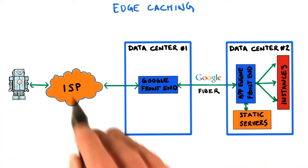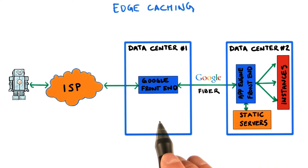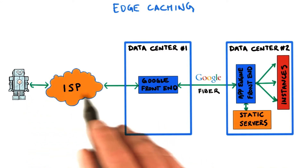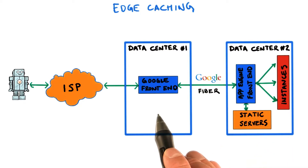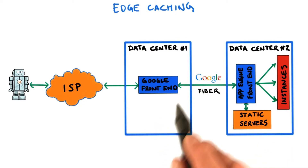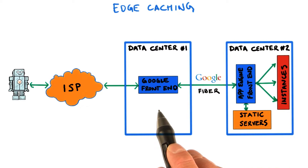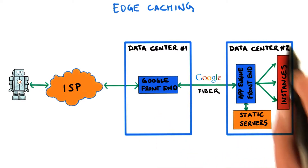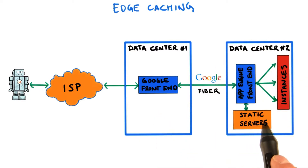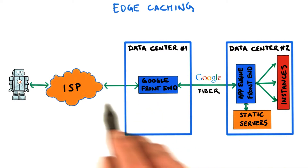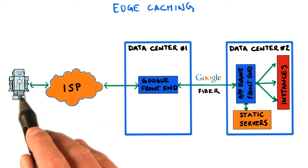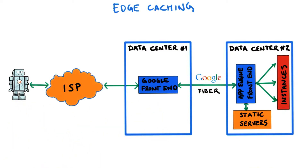So this is a good architecture, but as it looks right now, all the requests have to be sent to the data center which hosts your App Engine application. It would be much better if more content could be served directly by this data center. First of all, it would ease the load on this data center. But more importantly, since it's closer to the users, the response would be delivered faster. This is exactly what edge caching is all about.